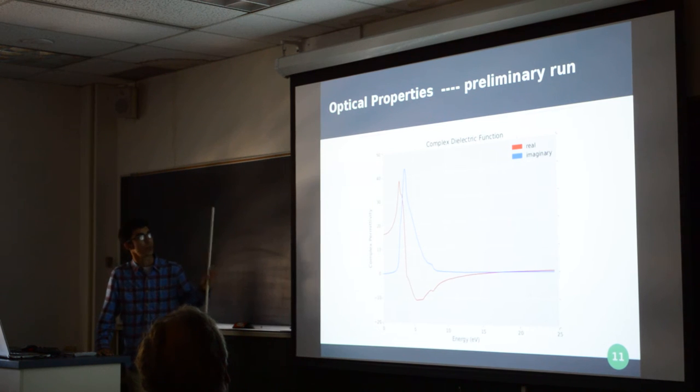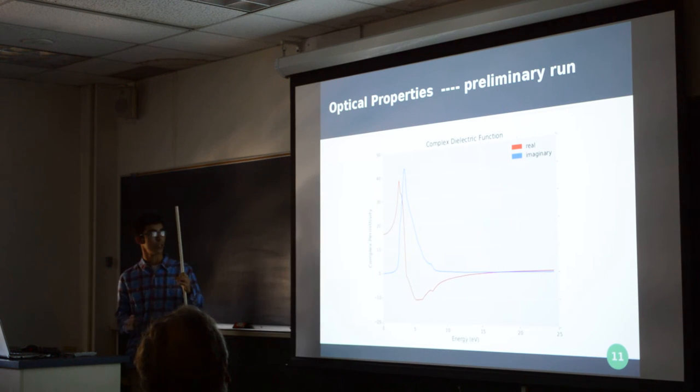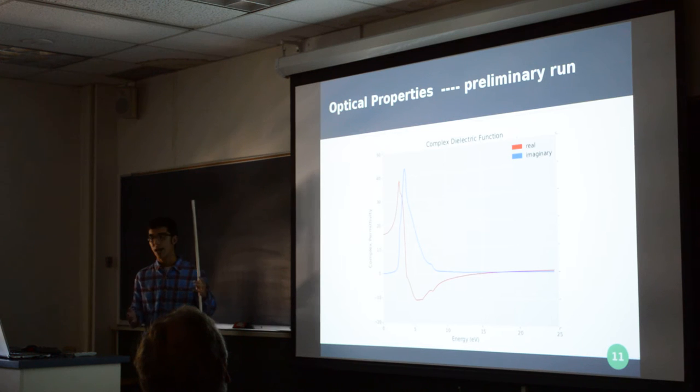So, this is the preliminary run that I did with optical properties. With the INCAR tag, there's a single tag that I can use to just help output to run just the optical properties. However, there are more tags that I can change as well to get more accurate results there. Which is why I call this the preliminary run.